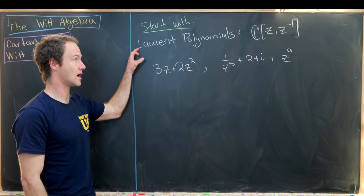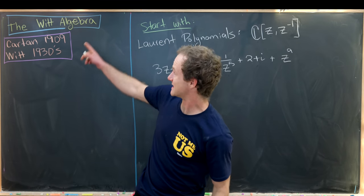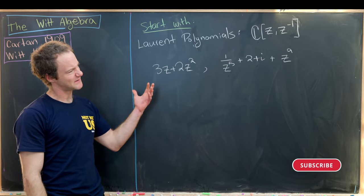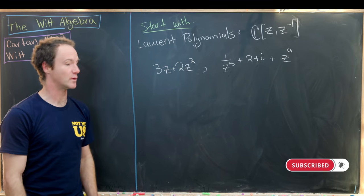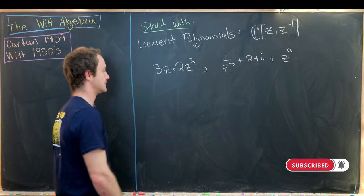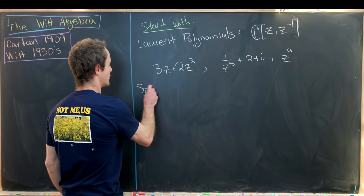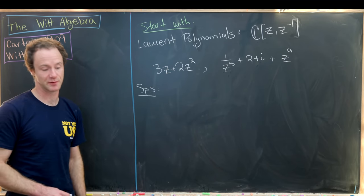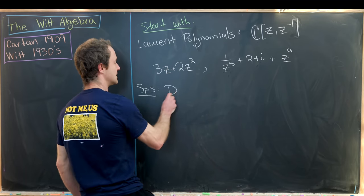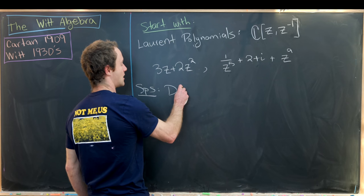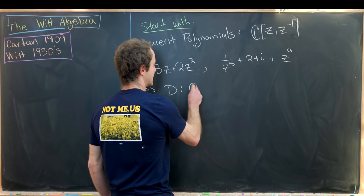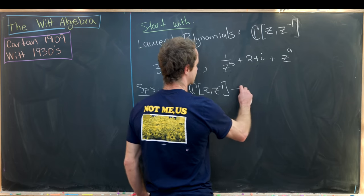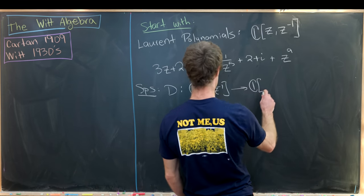This algebra of Laurent polynomials is not itself the Witt algebra, but it is in fact a natural space that the Witt algebra acts on. From here, we want to suppose that we have a special map on this algebra of Laurent polynomials.